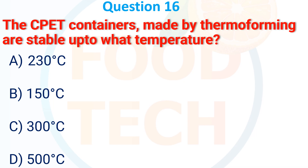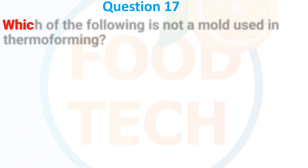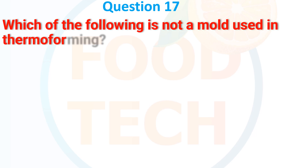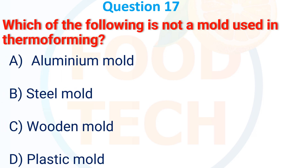Containers made by thermoforming are stable up to which temperature? (a) 230 degrees Celsius, (b) 150 degrees Celsius, (c) 300 degrees Celsius, (d) 500 degrees Celsius. The answer is (a) 230 degrees Celsius.